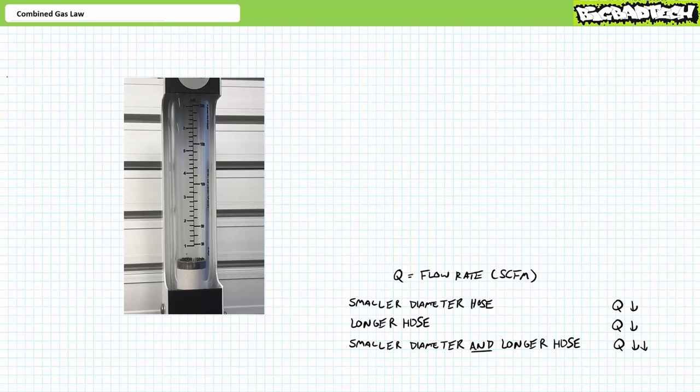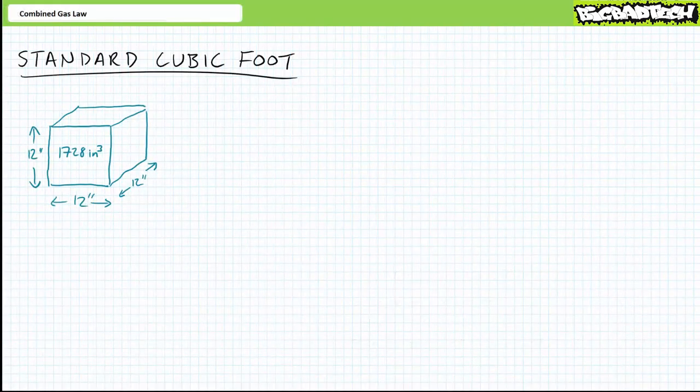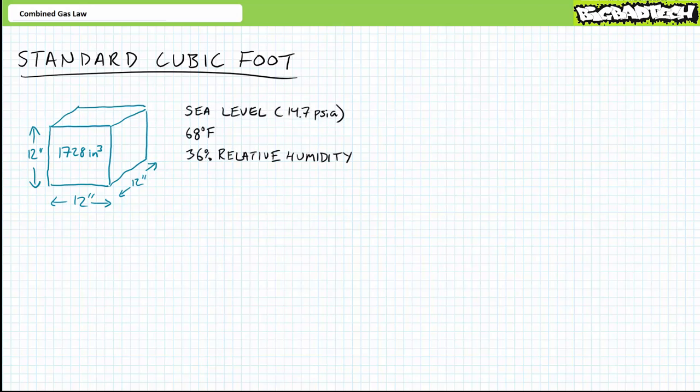A standard cubic foot of air occupies one cubic foot of volume, being a cube 12 inches high, 12 inches wide, and 12 inches deep, or 1,728 cubic inches. Given gases are compressible, other important properties define the standard cubic foot: specifically a temperature of 68 degrees Fahrenheit, a relative humidity of 36%, and an atmospheric condition at sea level — 0 psi gauge, or 14.7 psi absolute. Given these standard conditions, there exists a constant, finite amount of gas molecules inside the space.